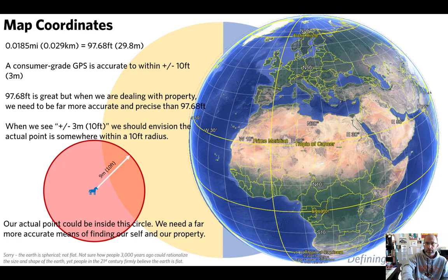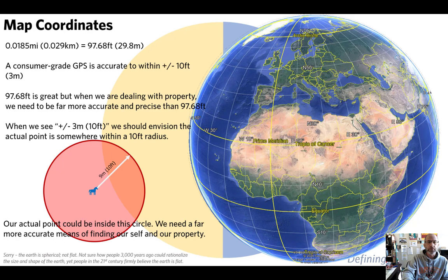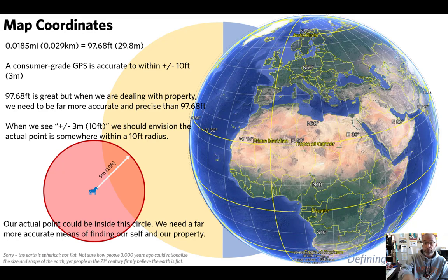Thirty feet of accuracy may keep you out of the water but could lead you off a cliff in rugged terrain. Mapping software doesn't always account for topography well. This is why geography classes are important — there's a level of technology out there that impacts your life and your day-to-day decision making.